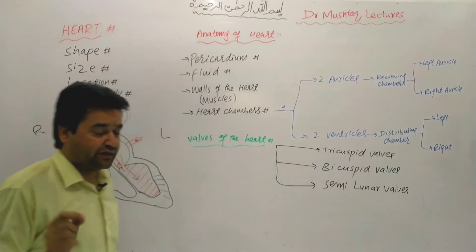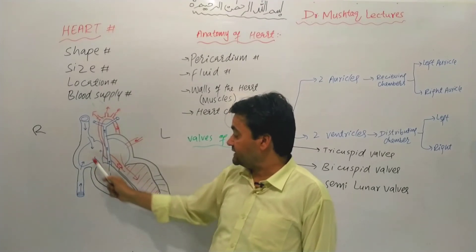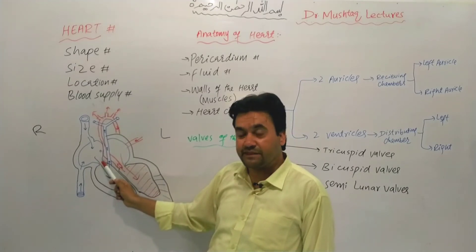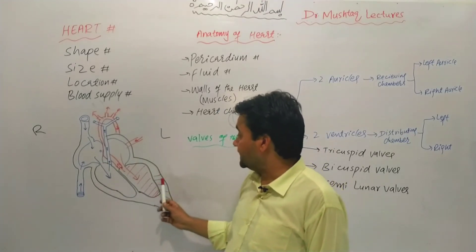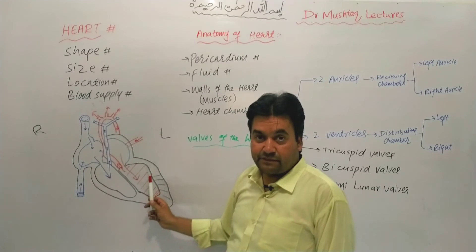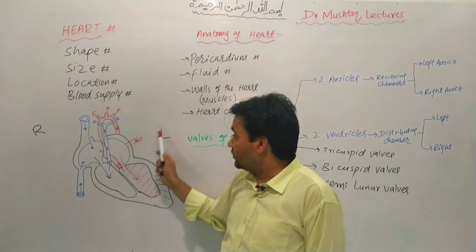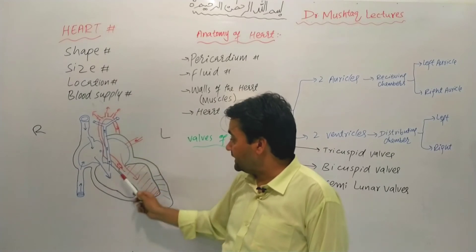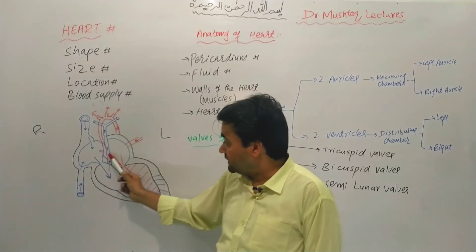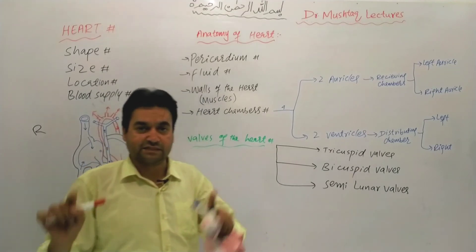The valves of the heart are: Tricuspid, Bicuspid, and Semilunar valves. The right side has the Tricuspid valve between the two right chambers. The left side has the Bicuspid valve. The Semilunar valves are found at the pulmonary artery and the aorta.